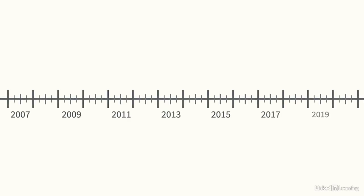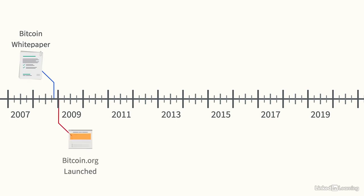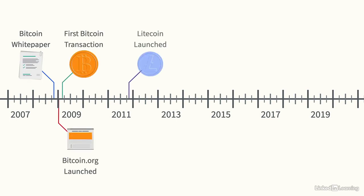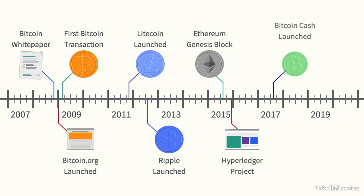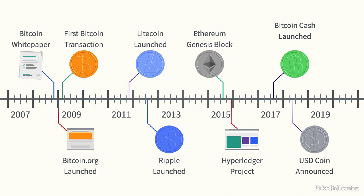While Bitcoin was the first cryptocurrency based on the distributed ledger design proposed in Satoshi's 2008 paper, it wasn't long before other cryptocurrencies emerged. The Bitcoin system that was spun up in 2009 was developed as open source code, meaning it could be legally copied and modified for other uses. Eventually, there will be thousands of cryptocurrencies, many based on Bitcoin and others with a similar architectural design, but different code base.